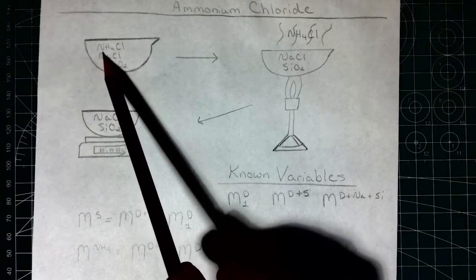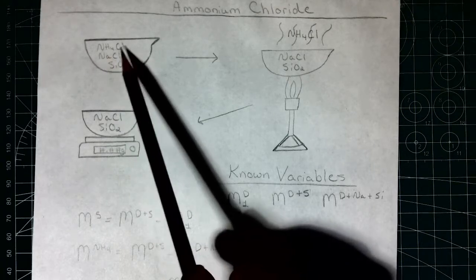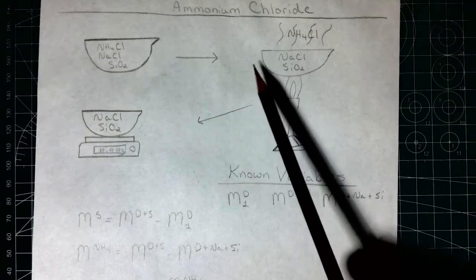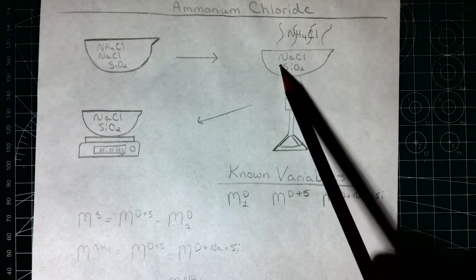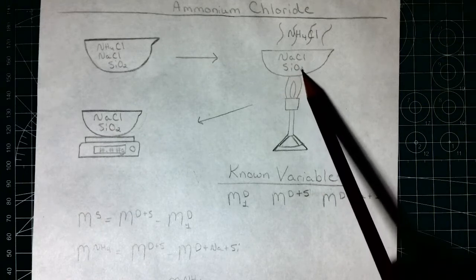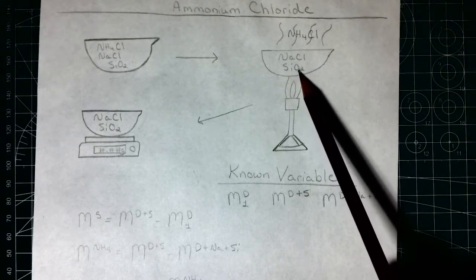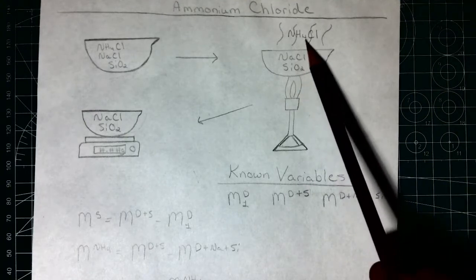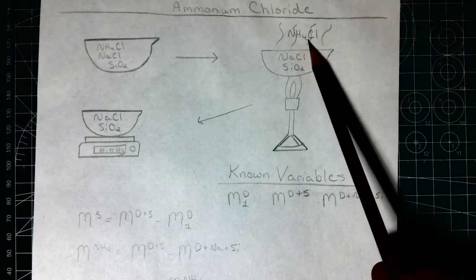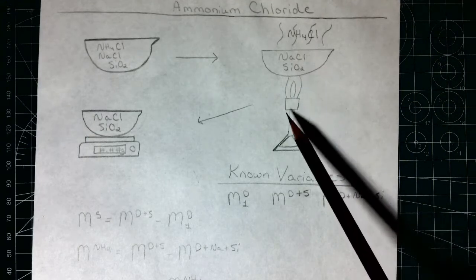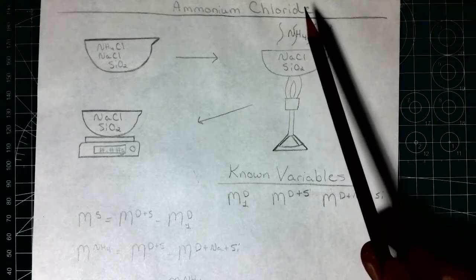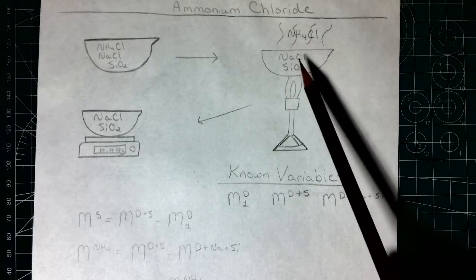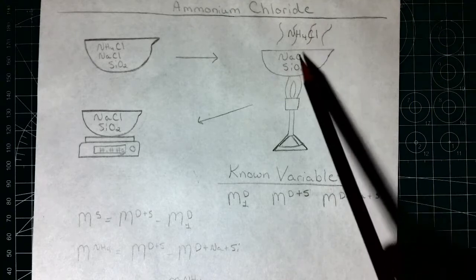The first thing we're going to do is remove the ammonium chloride, and we're going to do that by simply heating it. The sodium chloride and the silicon oxide have very, very high melting point values, so they're not going to sublime. But the ammonium chloride will sublime. So we heat it up real hot and the ammonium chloride is just going to go straight from a solid into a vapor and leave the dish.